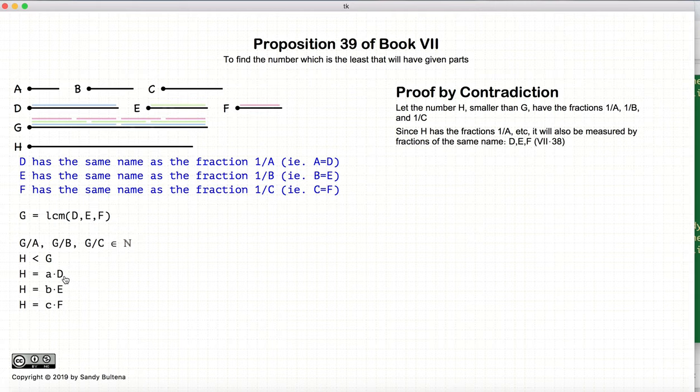So that if D, E, and F measure H, well, we've stated that D, E, and F measure G, but that G is the lowest common multiple. So therefore, there is no number H that also is measured by D, E, and F, and that is our contradiction.